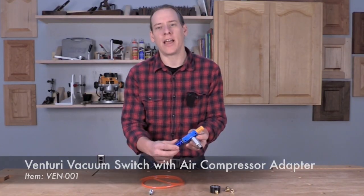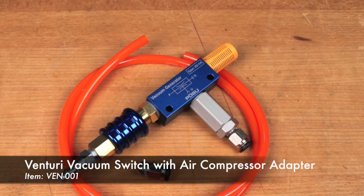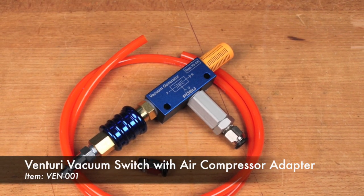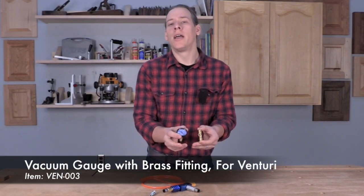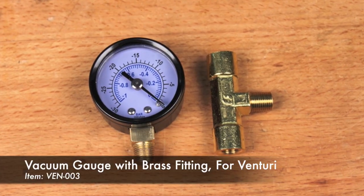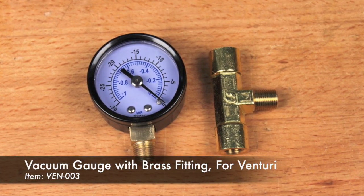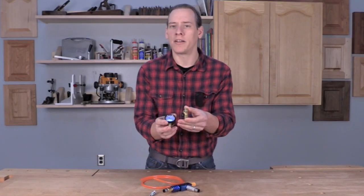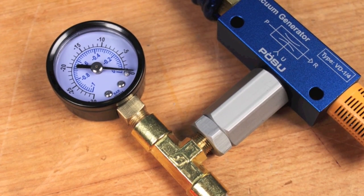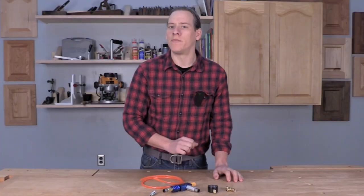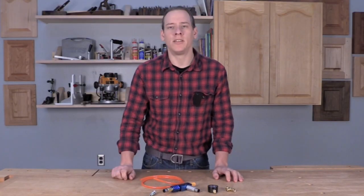The Venturi vacuum switch, which now includes the correct fitting to quickly and easily attach your air compressor hose to the Venturi, and also the new vacuum gauge accessory kit that comes with a 1.5 inch vacuum gauge and the correct fitting to make it quick and easy to attach the gauge to your Venturi so that you can monitor and fine tune the amount of vacuum that you create with your Venturi.